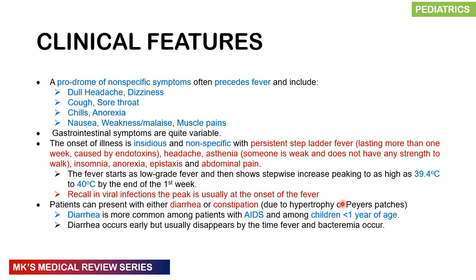What are the clinical features? There is a prodrome of non-specific features that often precede the fever: dull headache, dizziness, cough, sore throat, chills, anorexia, nausea, weakness, malaise, and muscle pains — mimicking many other conditions including malaria. The gastrointestinal symptoms are quite variable. Generally, the onset of the illness is gradual, insidious, and non-specific, but there is a persistent stepladder fever.